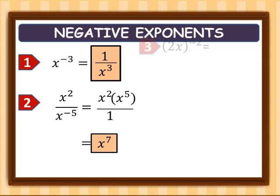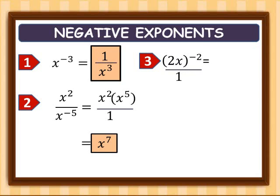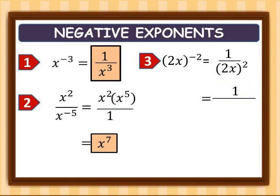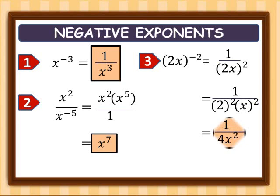Example three: quantity of 2x, close quantity, raised to negative two. This is found in the numerator over one, so to get the reciprocal this becomes one over 2x, and the exponent becomes positive two. Distributing the exponent, we have one over 2 squared multiplied by x squared. Since 2 squared is 4, the answer is one over 4x squared.